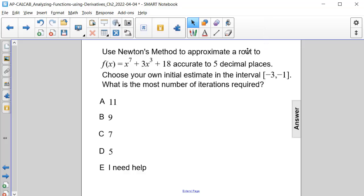Use Newton's method to approximate a root to f(x) equals x to the 7th plus 3x to the 3rd plus 18, accurate to 5 decimal places. Choose your own initial estimate in the interval from negative 3 to negative 1. And then answer this question: what is the most number of iterations required?